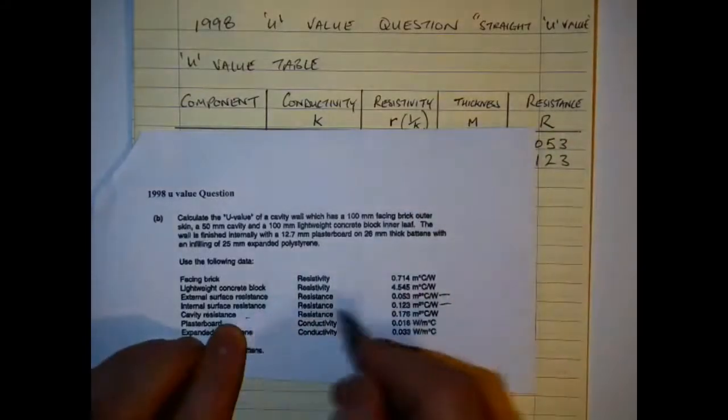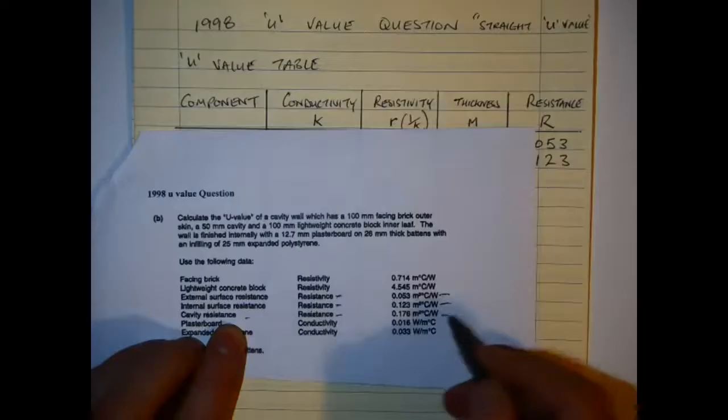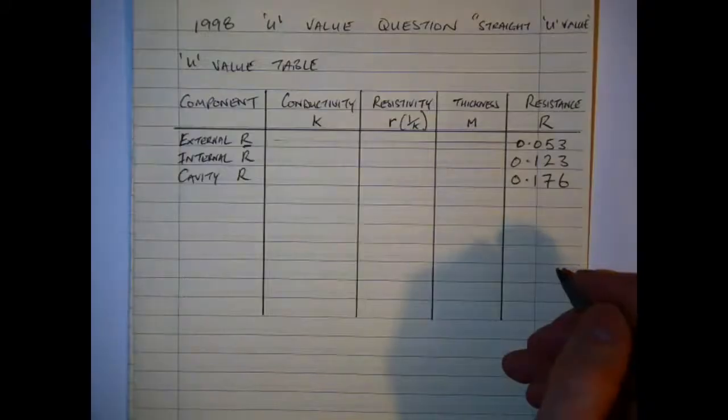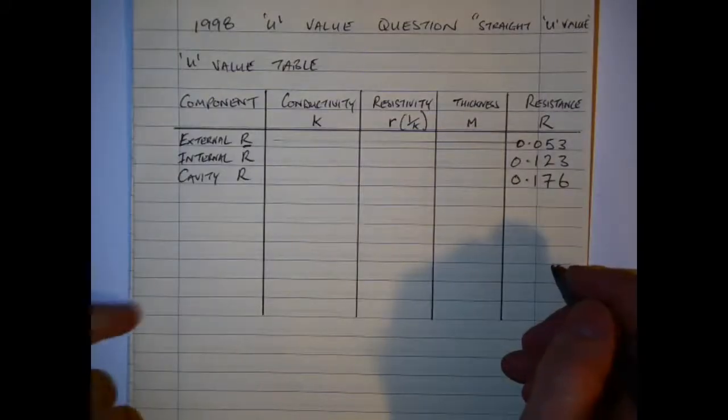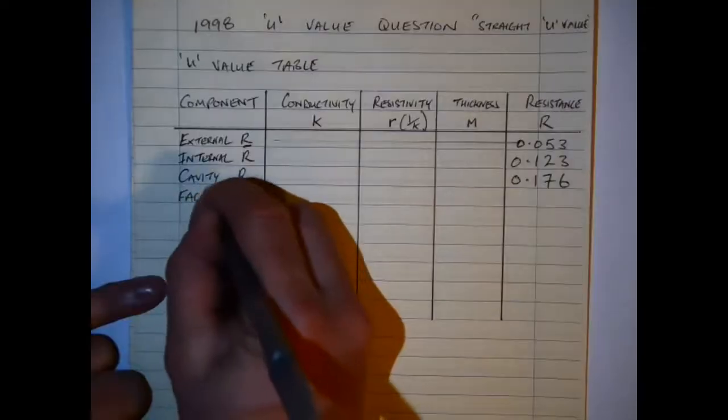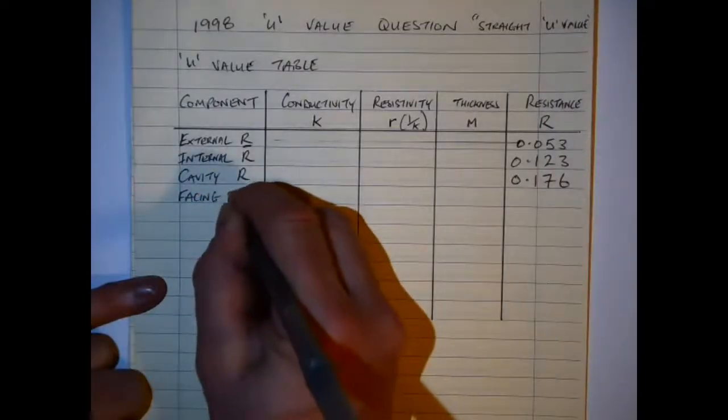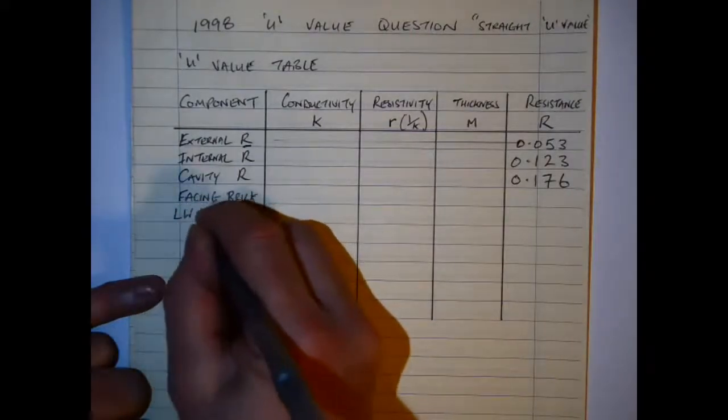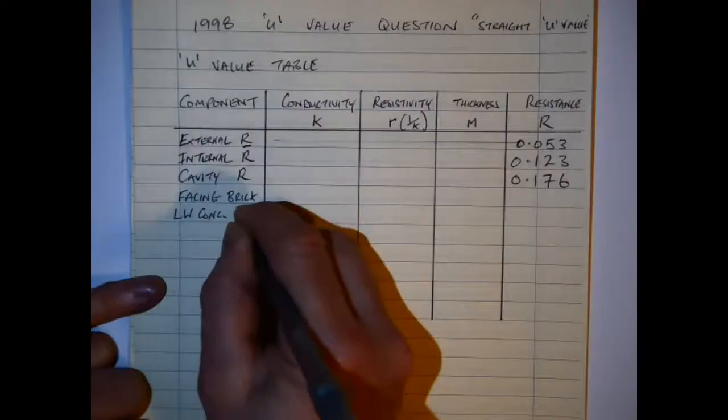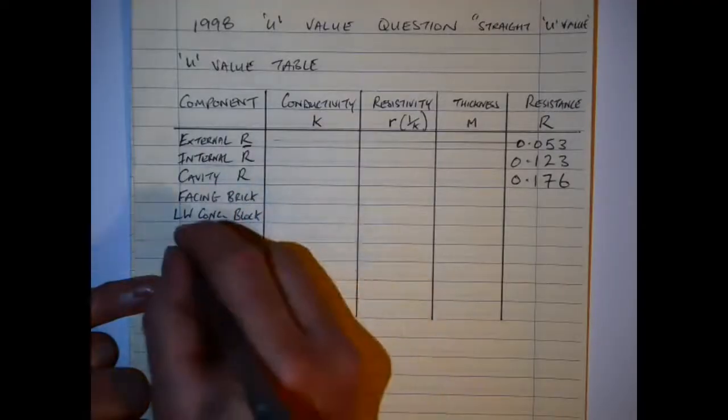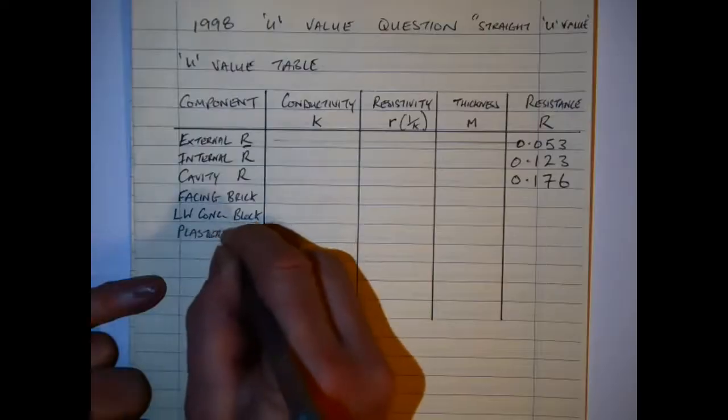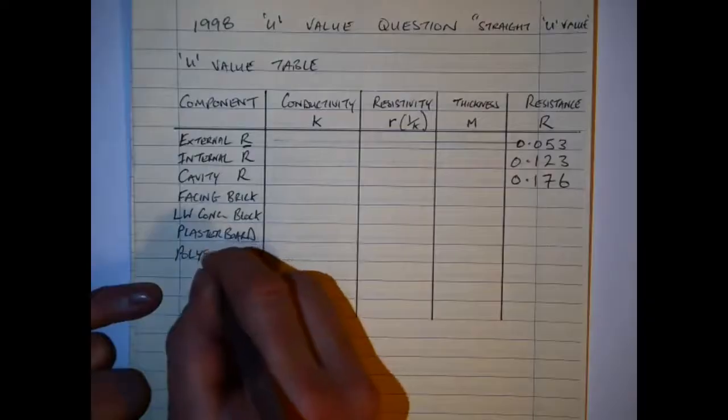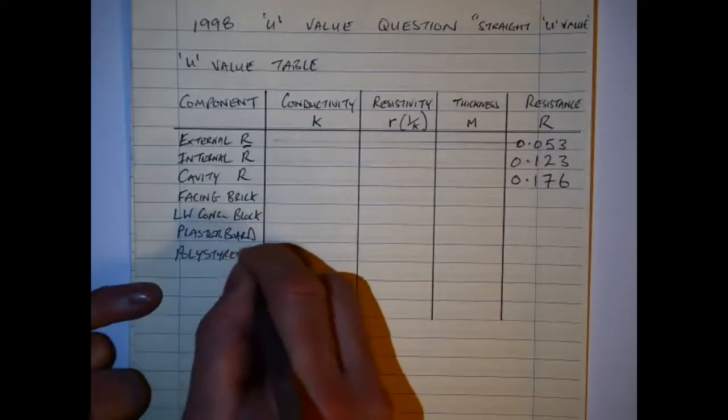Now for the other elements that we have here, we need to enter them and they would have been highlighted from here before. So we start off by putting the facing brick. I have lightweight concrete block, so just LW concrete block. I have plaster, or the plasterboard, and I have polystyrene which is the insulation.